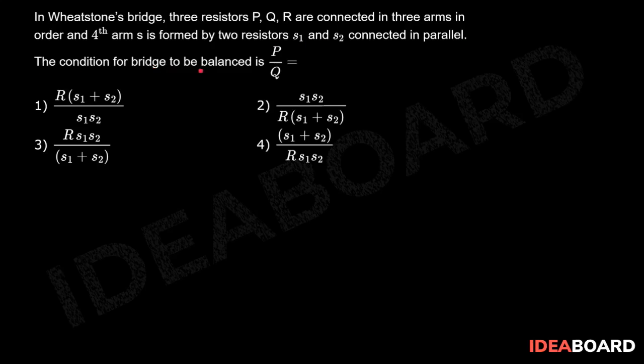The condition for bridge to be balanced is P by Q equals... So generally, the balanced condition of the Wheatstone bridge is P by Q equals R by S.